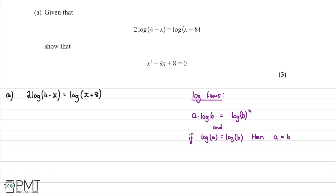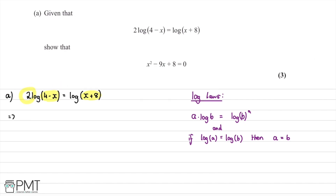In this question, we're given 2log(4 − x) = log(x + 8) and asked to show this is equivalent to x² − 9x + 8 = 0, worth three marks. We need to eliminate the coefficient 2 in front of the log. Using the power log law: a·log(b) = log(bᵃ), so 2log(4 − x) becomes log((4 − x)²).